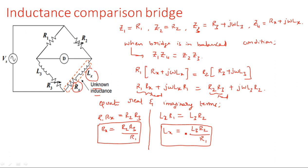In this way we solve any type of bridge network using the balanced condition. Remember: you can only find the unknown component values when the bridge is in balanced condition. When the bridge is not in balanced condition, you cannot determine the values of the unknown components.